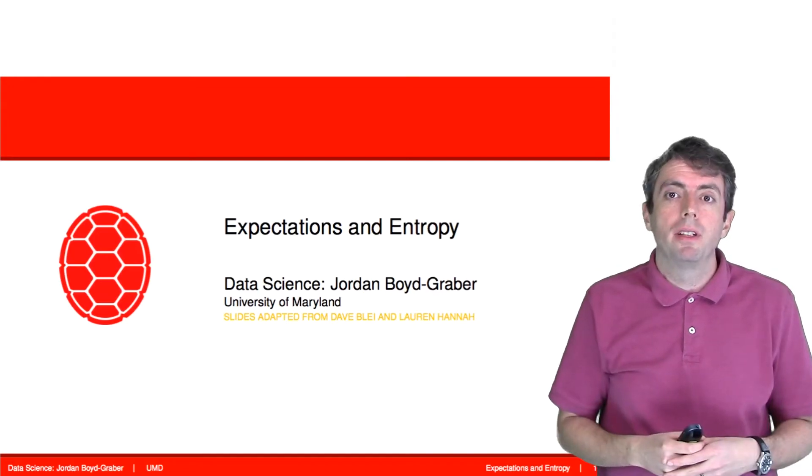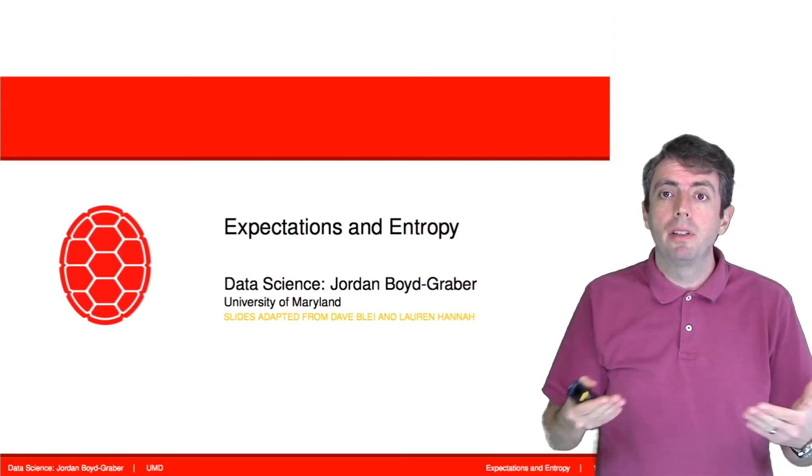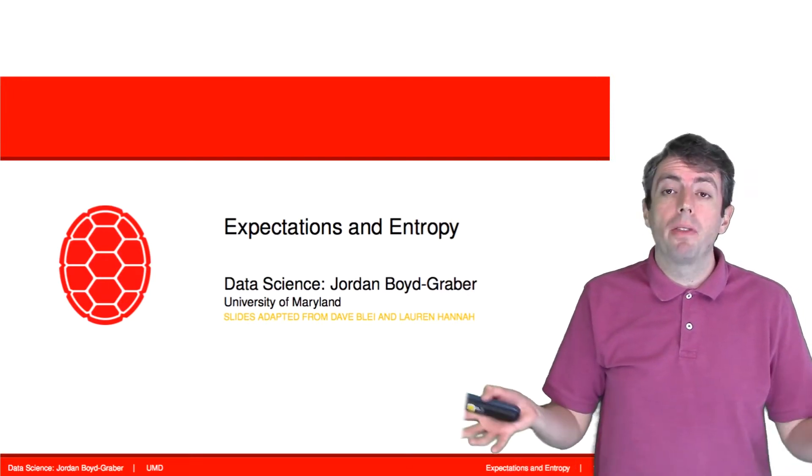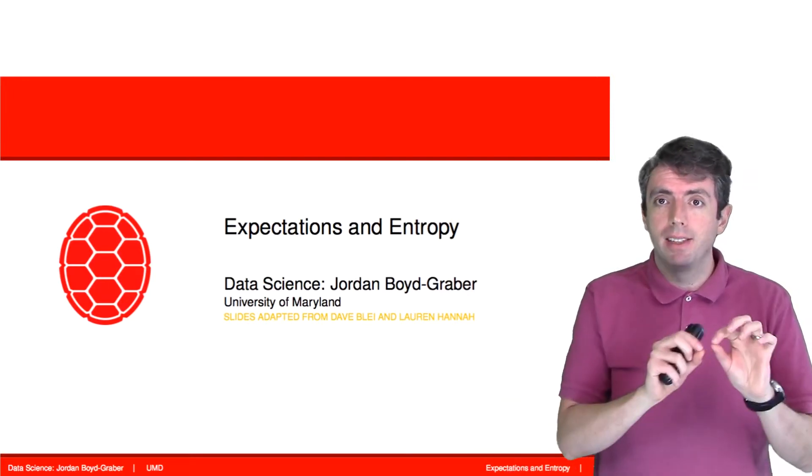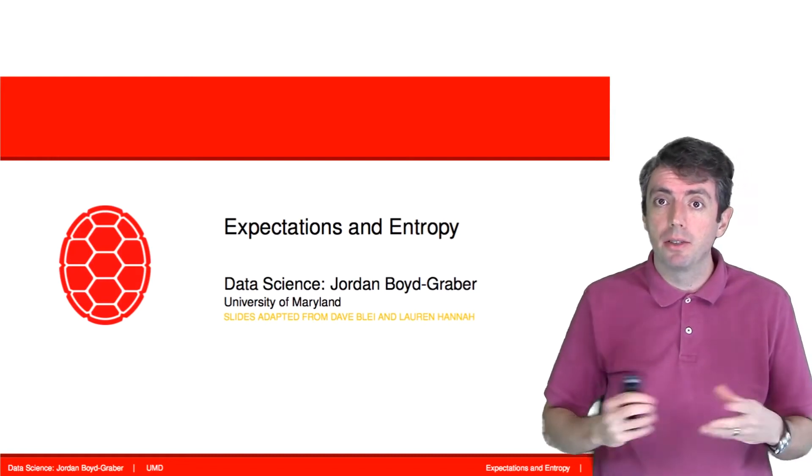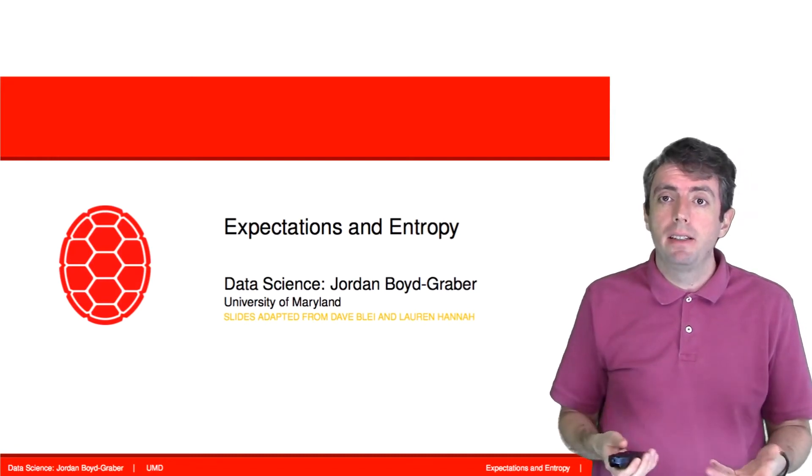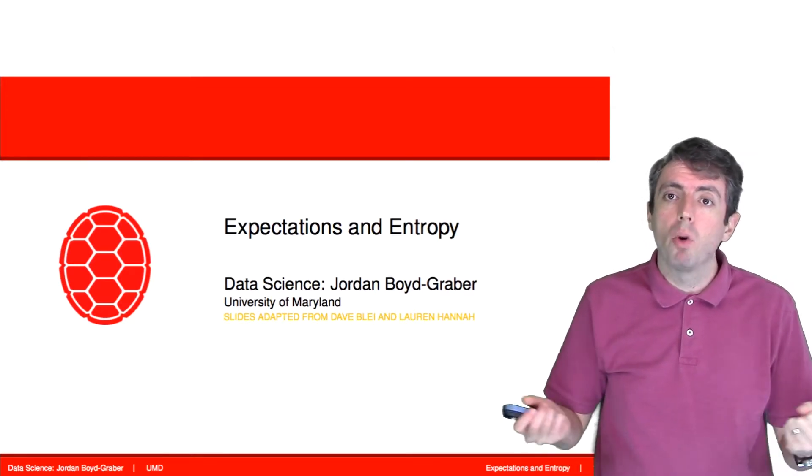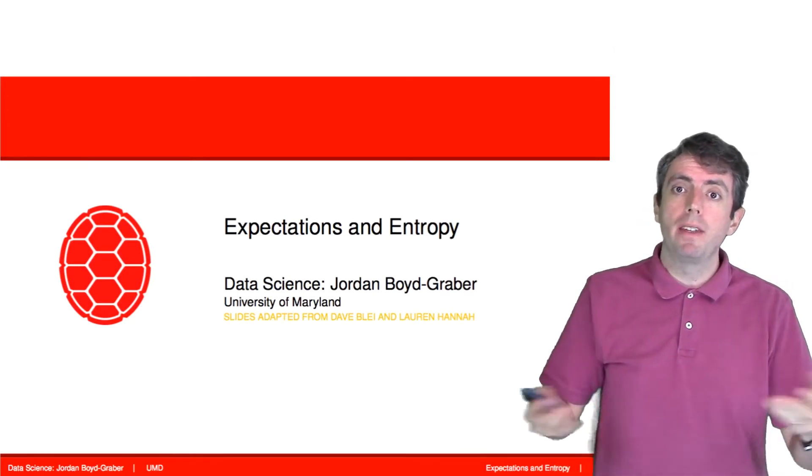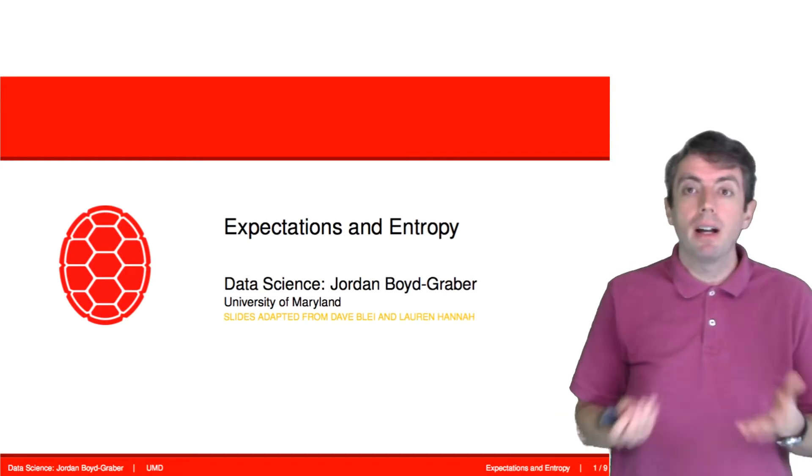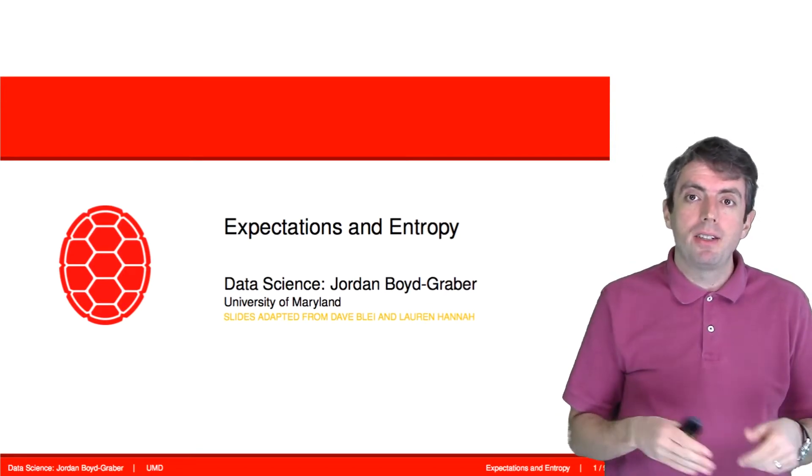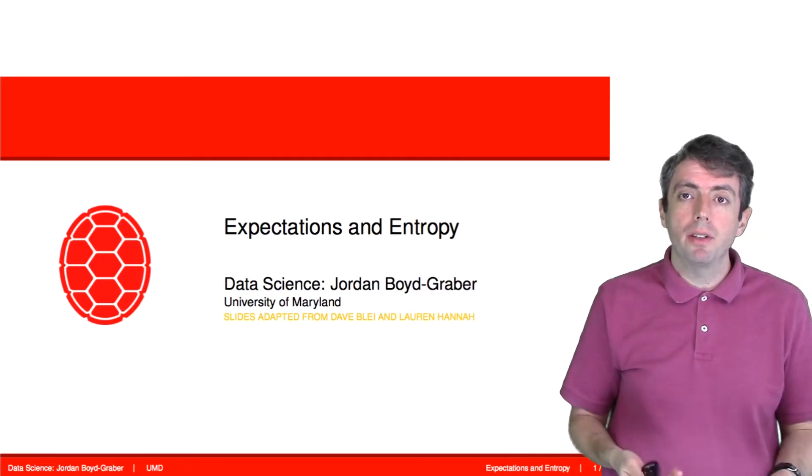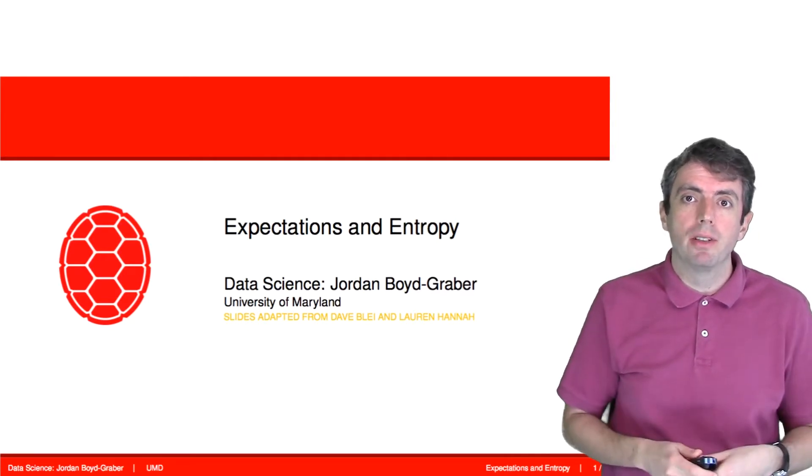Often when we have a distribution, we want to be able to describe it to other people. While we've been doing this with very simple distributions by listing all the probabilities of a discrete distribution, as these probability distributions get more complicated, we'll need more compact ways of describing what these distributions are like. I'm going to talk about expectation and entropy, two very specific ways that we use to describe what a distribution is like.